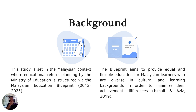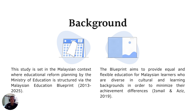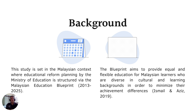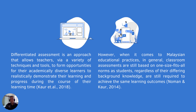The background here is the study set in the Malaysian context where educational reform planning by the Ministry of Education is structured via the Malaysian Education Blueprint. This blueprint aims to provide equal and flexible education for Malaysian learners who are diverse in cultural and learning backgrounds in order to minimize their achievement differences.